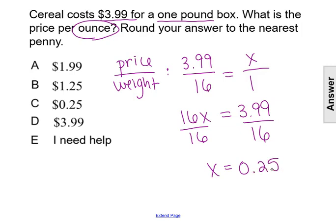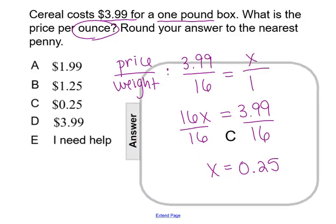If we round to the nearest penny, 0.25. So if X equals 0.25, that makes our answer C, 25 cents.